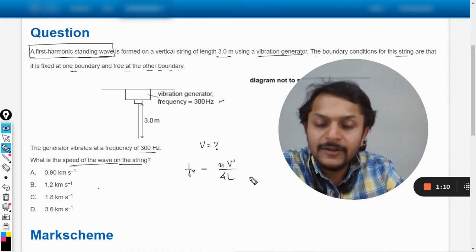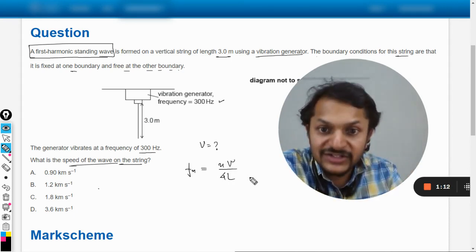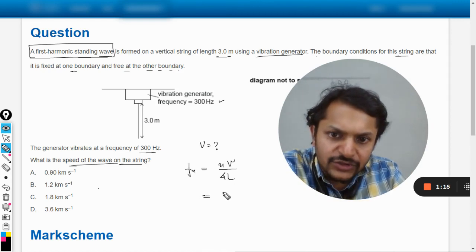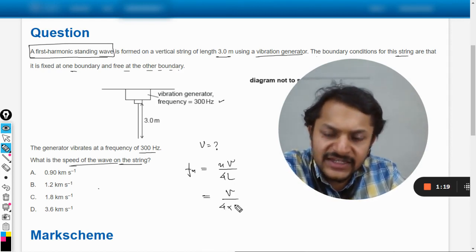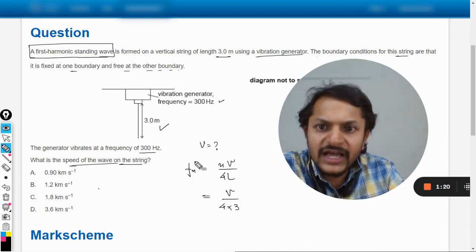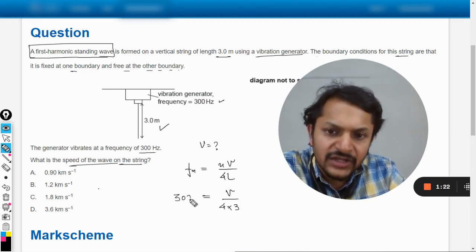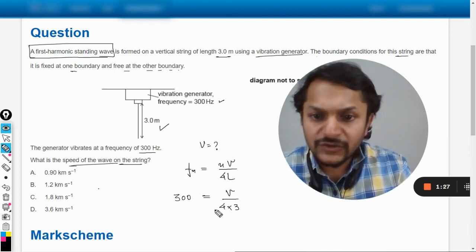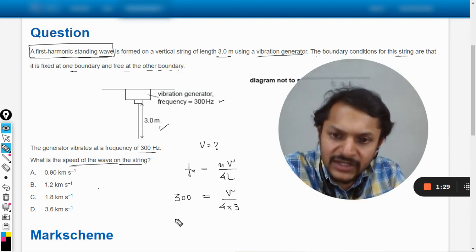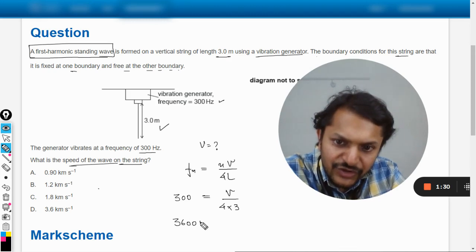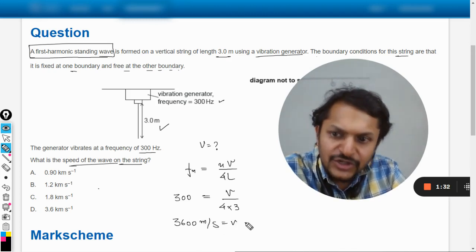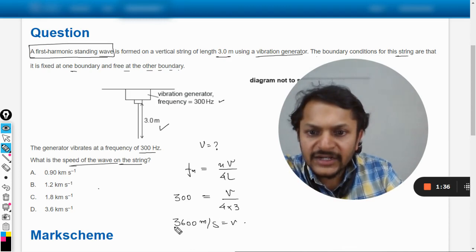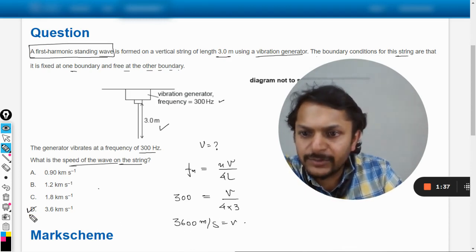We're talking about the first harmonic, so n is one, velocity is unknown, the length is given as 3 meters, and the frequency is given as 300. It's a simple calculation. Four times three is twelve, twelve times three hundred is thirty-six hundred, so it will be 3600 meters per second.